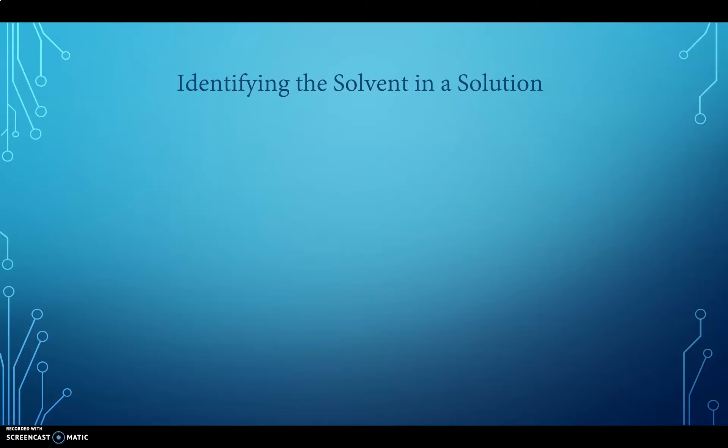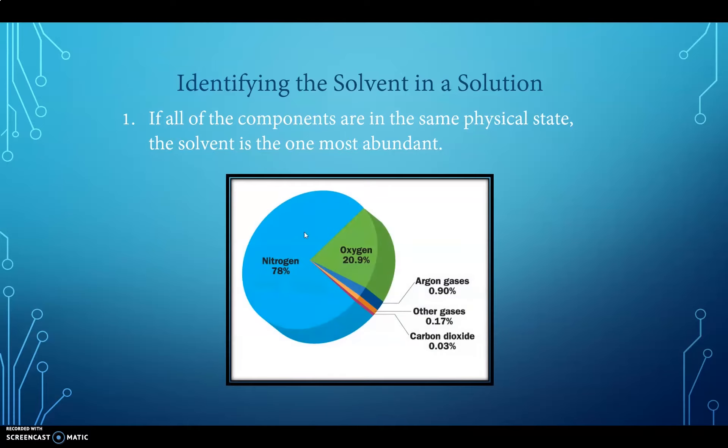So how do we identify which substance is the solvent in a solution? And there's actually two different things we have to consider. First, if all the components of the solution are in the same physical state, either they're all gases, all liquids, or all solids, then we go by whichever one is the most abundant. So whichever one there's more of. A good example would be air. Air contains a number of different gases. Nitrogen is the most abundant of those gases, and therefore we would consider nitrogen to be the solvent in air.